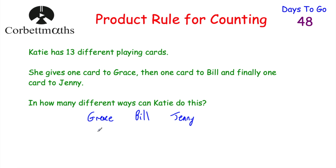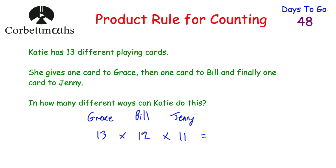For the card Katie gives to Grace, she has 13 different cards, so she could give any one of 13. For Bill, Katie has already given one card to Grace, so she now has 12 cards left — 12 possible choices. For Jenny, Katie has given one card to Grace and one to Bill, so she has 11 cards left. So we do 13 × 12 × 11 = 1,716 different possible ways. If you got that, well done.